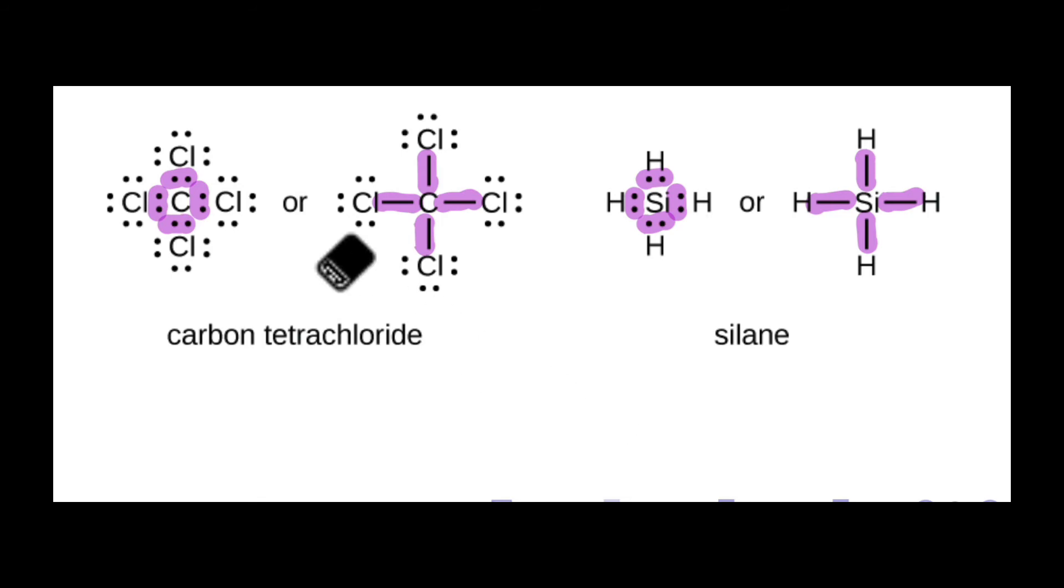The last thing I'll point out is that the chlorines in carbon tetrachloride are also satisfying the octet rule. However, there's one type of atom in these two molecules that is not satisfying the octet rule. Can you spot it?